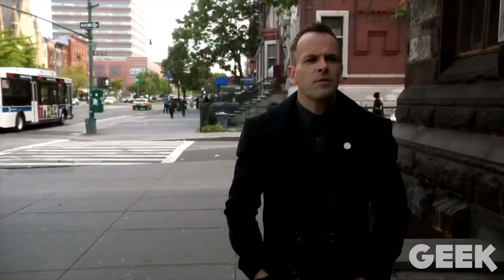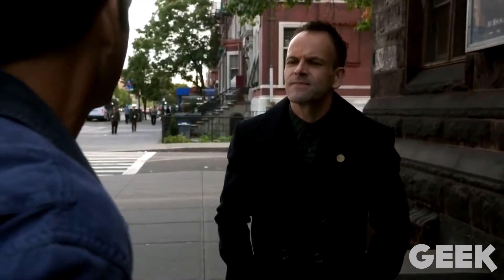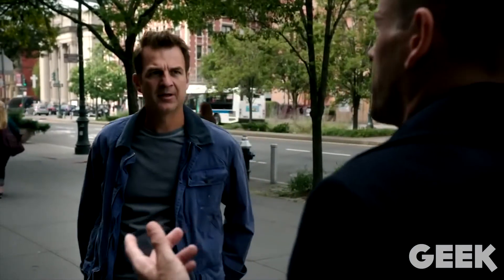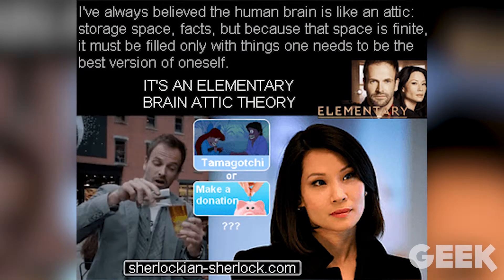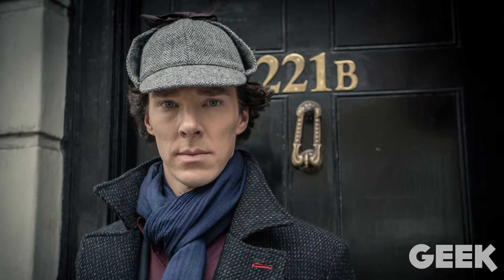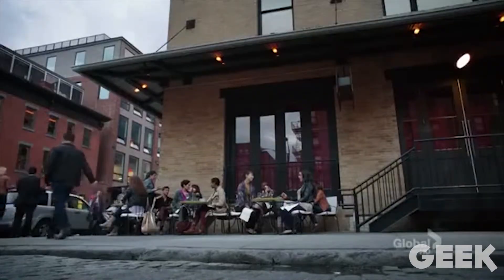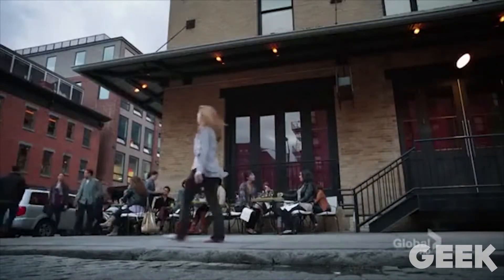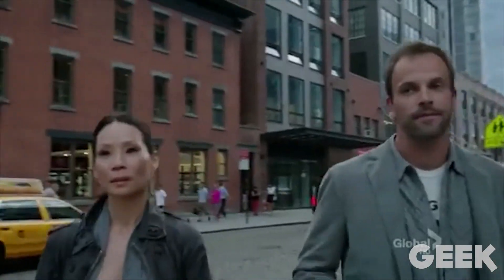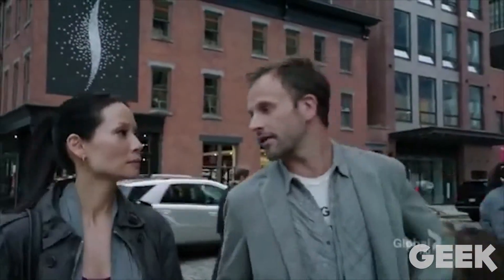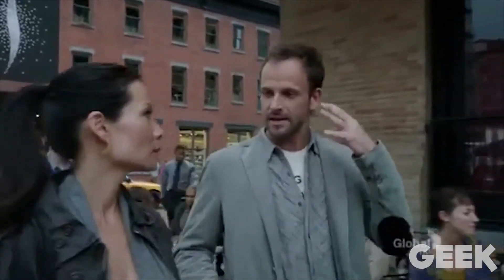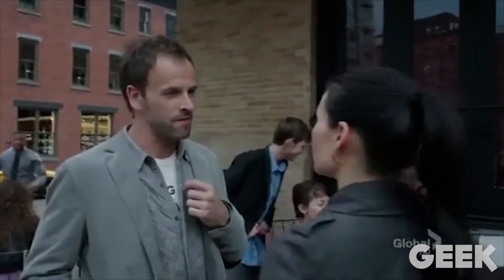This theory actually applies more accurately to the way our working memory — a part of our short-term memory — works. Studies and research spanning hundreds of years have shown that we can only really store up to maybe 7 things, although now it's considered to be closer to 4 or 5, within our working memory. Say you're trying to remember a sequence of random numbers or random words — at absolute best, you're only going to store about 7. So your working memory very much acts like an attic. To Sherlock, why bother storing whether or not the Earth rotates around the Sun when he can store more relevant details to the case he's working on?